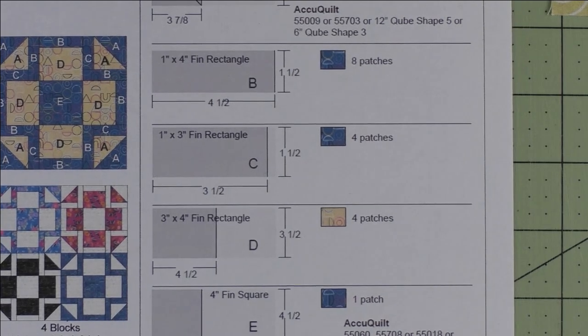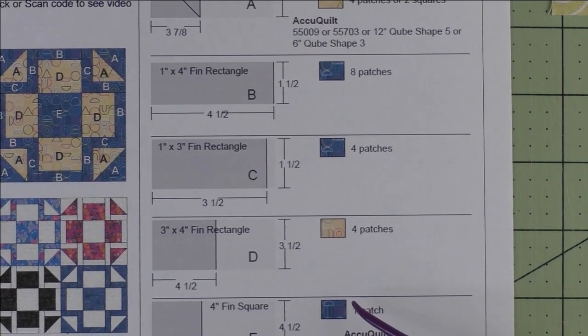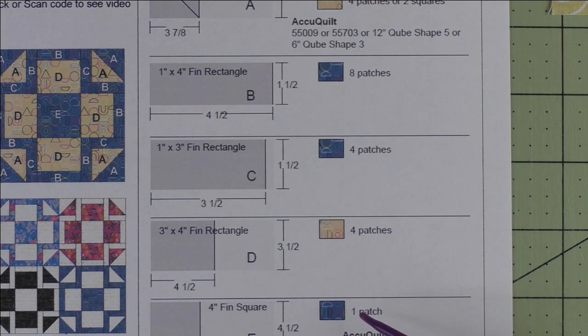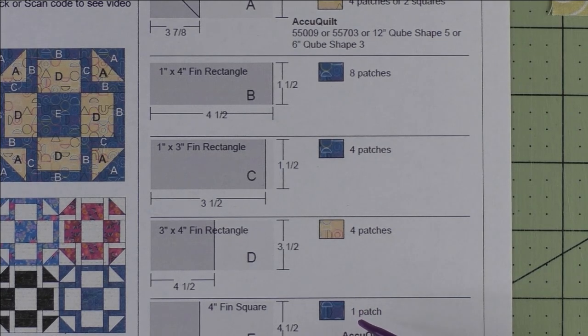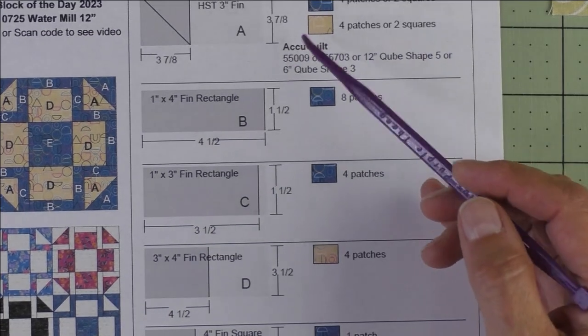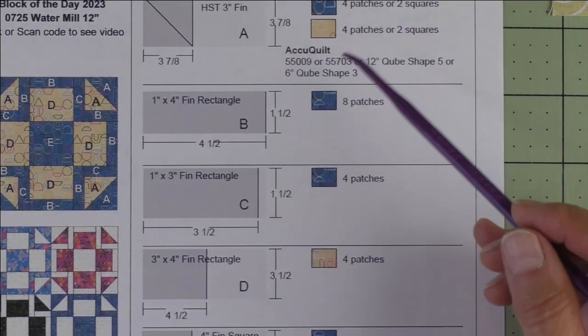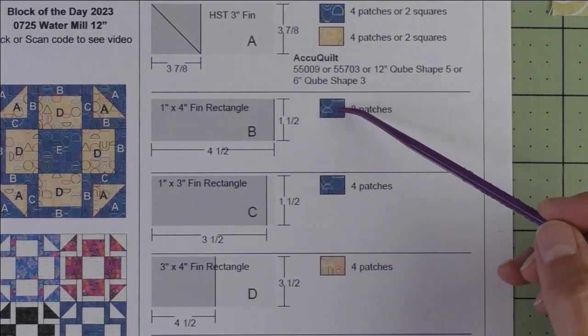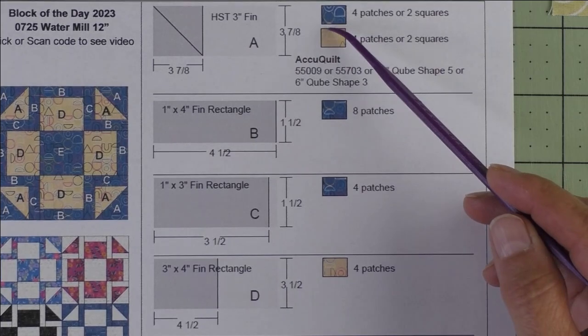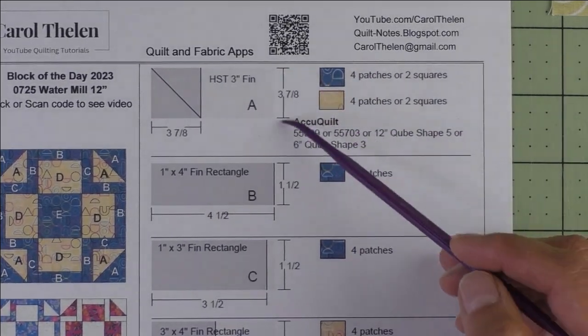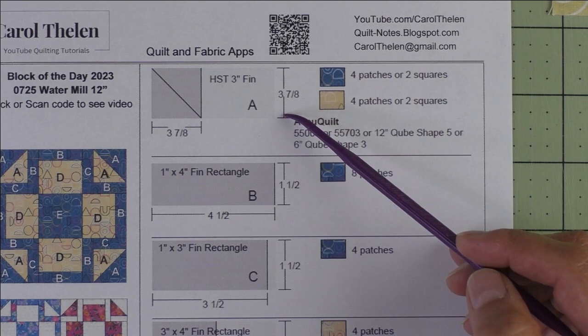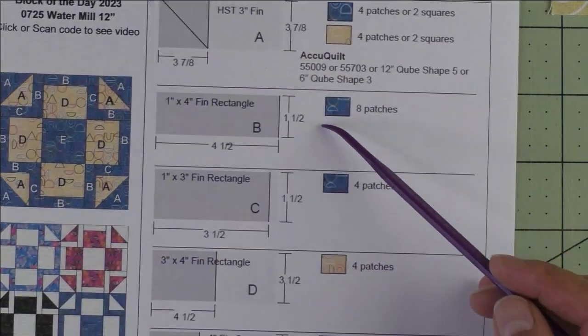I realized that if I'm cutting the dark fabric, I look at patch A which is three and seven eighths inches, that's what I'll need to cut for that. Patch B, I would need to cut one and a half inches, same for patch C. And for patch E, four and a half inches.